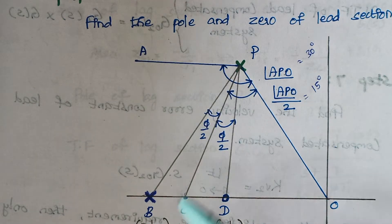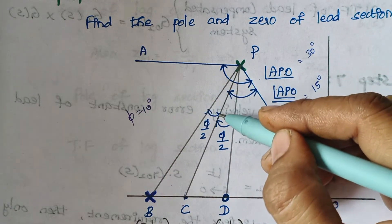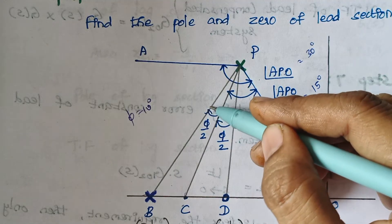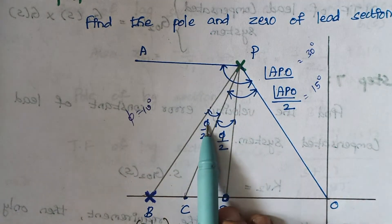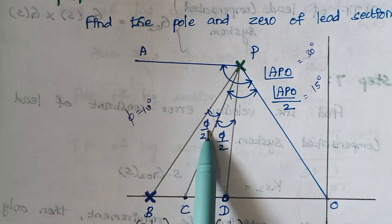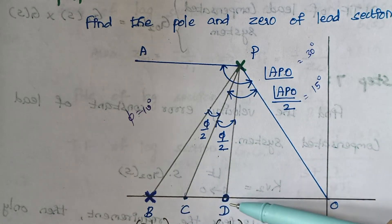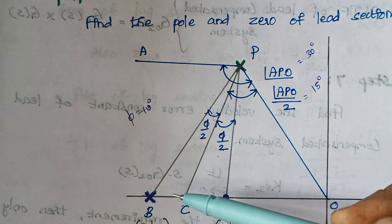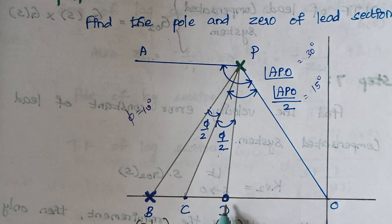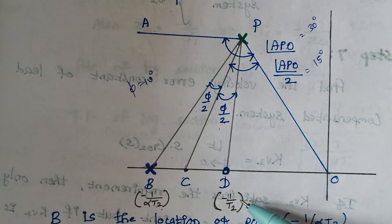From the bisector line, mark the angle pi found in the previous step. For example, if pi is 10 degrees, mark 5 degrees above and 5 degrees below the bisector line, denoted as pi by 2. Each side contributes the same angle — both are 5 degrees. These lines meet the x-axis at two points: one is marked as a pole and the other as a zero, since we are designing a lead section. The pole is given as minus 1 by (alpha·t2) and the zero is given as minus 1 by t2.